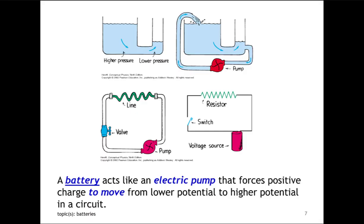A common analogy for batteries is that they act like electrical pumps. And this electrical pump, just like a water pump, will cause water to circulate around a water circuit, if you will, allowing water to go from lower pressure using the pump to take it back to higher pressure to continue the circulation. Batteries act like electrical pumps that force positive charges to move from lower potential to higher potential in a circuit.